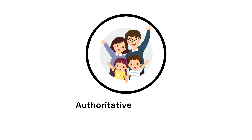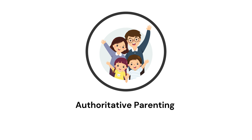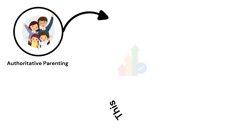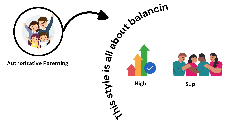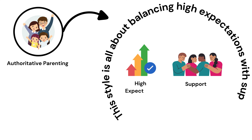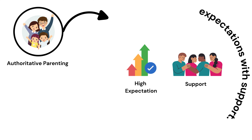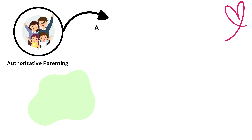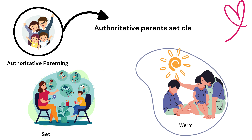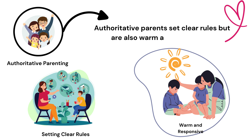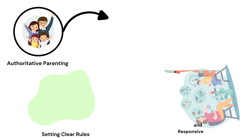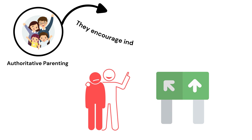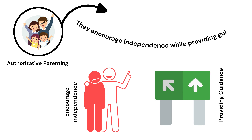Authoritative Parenting. This style is all about balancing high expectations with support. Authoritative parents set clear rules but are also warm and responsive. They encourage independence while providing guidance.